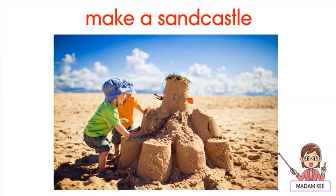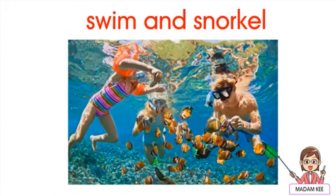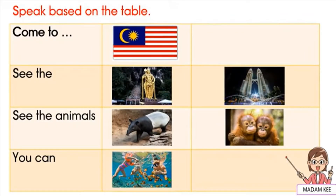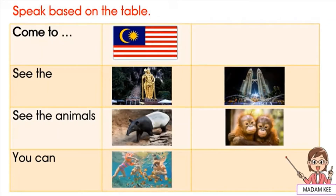You can make a sand castle on the beautiful island. You can even swim and snorkel in the sea. Let's try to speak before we start writing. Come to Malaysia! See the beautiful Batu Caves and the famous Petronas Twin Towers in Kuala Lumpur. See the animals — the tapir and the orangutan. You can swim and snorkel in the sea.